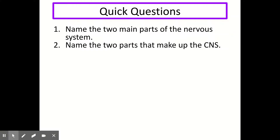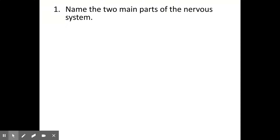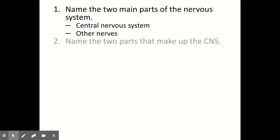Let's try some quick questions on what we've covered so far. Pause the video here and try these questions, either by saying them out loud or by writing them down, and when you're ready, play the video and we'll go through the answers. The two main parts of the nervous system are the central nervous system and the other nerves. The two parts that make up the CNS are the brain and the spinal cord.